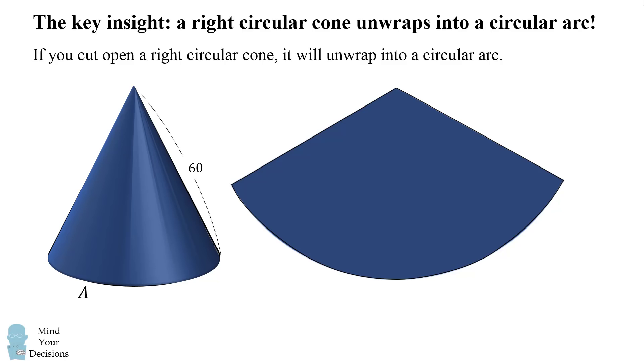Now why is it a circular arc? The reason is that each point on the cone's base is the same distance of 60 from the cone's vertex. So here's the cone's base and at the top is the cone's vertex. On the circular arc we have the cone's base at the bottom and the cone's vertex at the top.